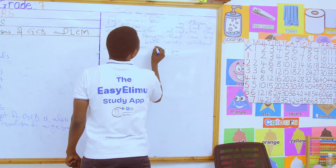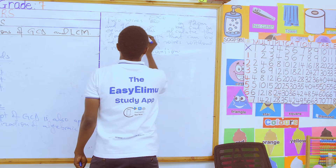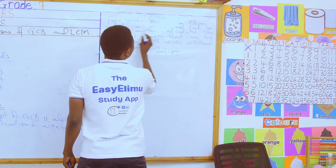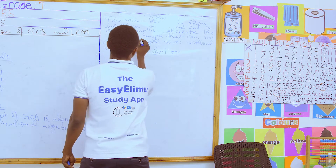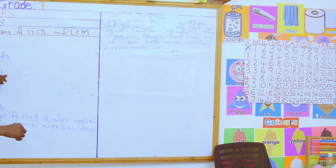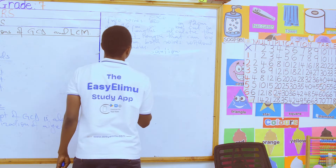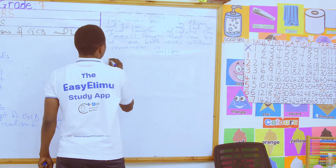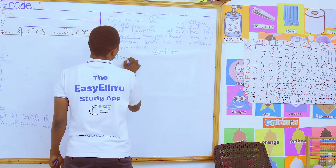Our keyword here is 'longest.' Calculate the longest — so that is our keyword, just like I highlighted. That is what shows us that we are supposed to use the GCD.